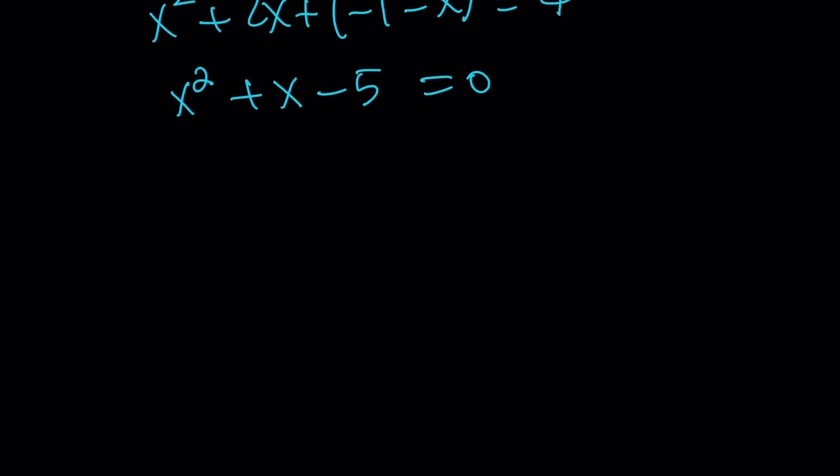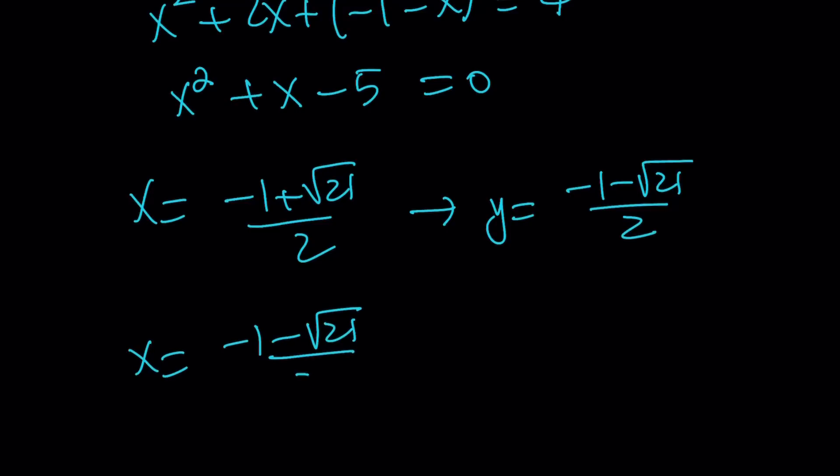So this equation has two solutions. x is either negative 1 plus the square root of 21 over 2. In this case, y is going to be the conjugate. Or they'll switch around. If x is negative 1 minus square root of 21 over 2, then y is going to be negative 1 plus the square root of 21 over 2. Along with 1, 1, and negative 4, negative 4, this is going to give us all the solutions. And this brings us to the end of this video.